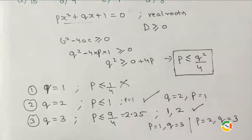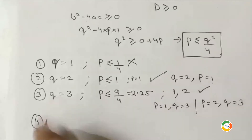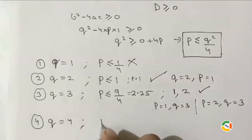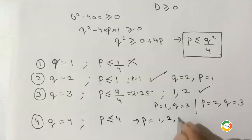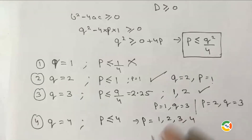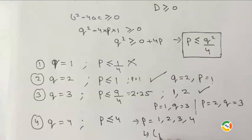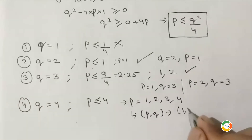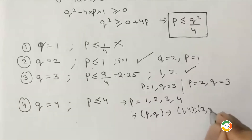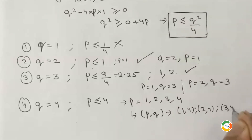Fourth case: if q = 4, then p ≤ 16/4 = 4. Therefore p can be 1, 2, 3, or 4. The valid pairs are (1, 4), (2, 4), (3, 4), and (4, 4), giving four solutions.